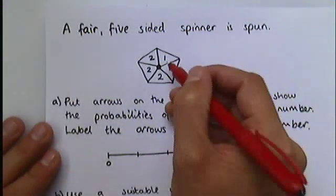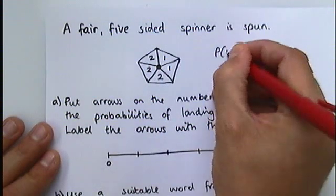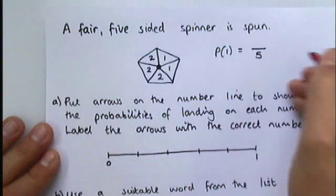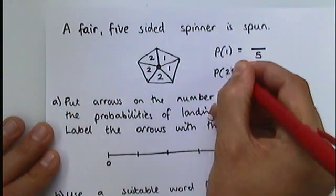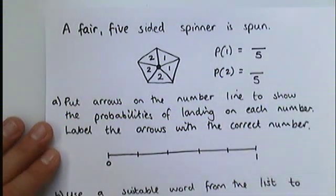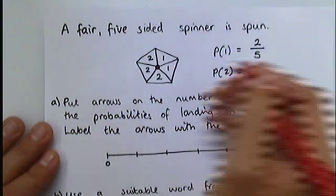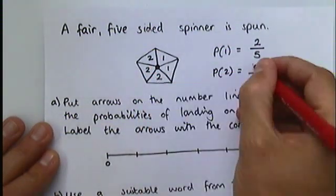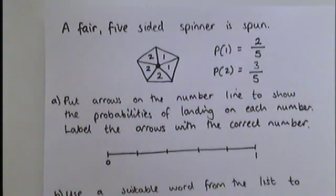So to do this, we need to do a little bit of work first of all. First of all, notice there are five sections to the spinner, so our probabilities are going to be out of five. Probability of getting a one is going to be something out of five, and our probability of getting a two is going to be something out of five. How many ones are there on the spinner? There are two of them. And how many twos are there on the spinner? There are three of them. So the first thing I've done is done a quick fraction for each of the probabilities. The probability of getting a one, two fifths. The probability of getting a two is three fifths.